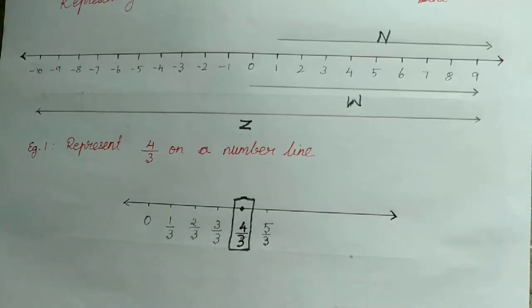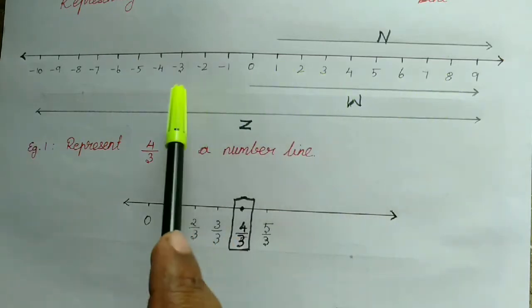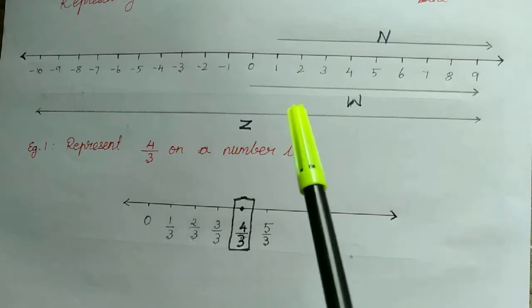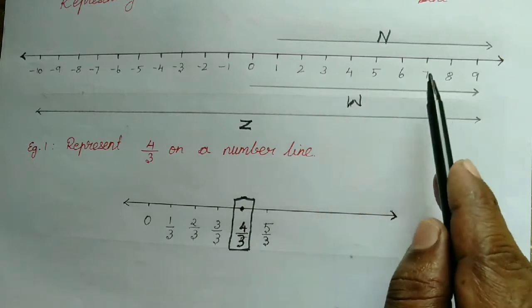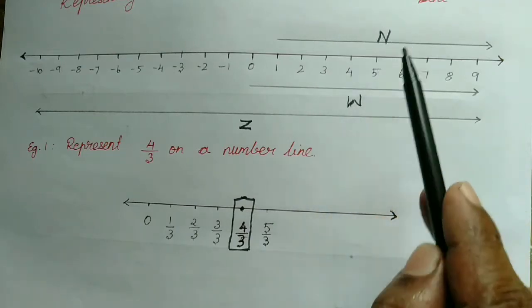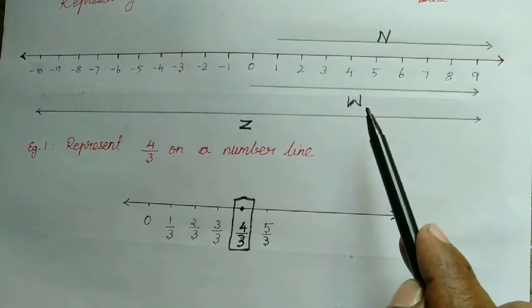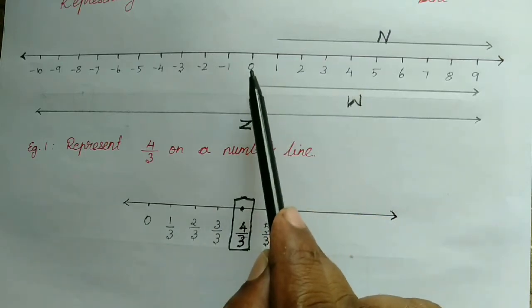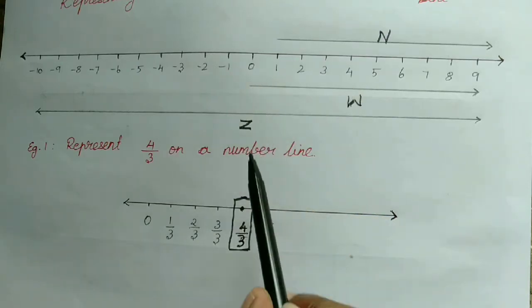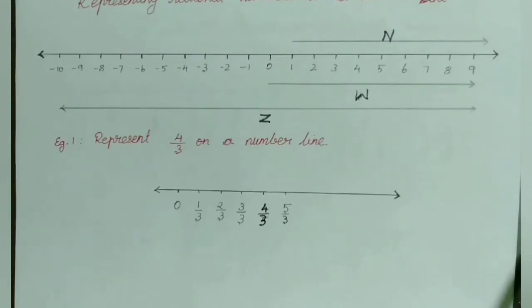Representing rational numbers on a number line. I have drawn a number line where we have positive numbers, negative numbers, and zero. Numbers starting from 1, 2, 3, etc. are known as natural numbers. Numbers starting from 0, 1, 2, 3, 4, etc. are known as whole numbers. Negative numbers, positive numbers with zero are known as integers, and we use the letter Z to denote integers.